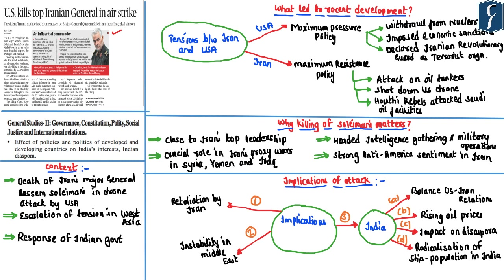In today's newspaper, we have multiple articles related to the killing of Iran's top security and intelligence commander, Major General Qasim Soleimani, by USA. The recent developments in West Asia shall be important mainly from the perspective of GS Paper 2, International Relations, under the subsection 'Effect of policies and politics of developed countries on India's interests.' USA carried out a drone attack in Baghdad which led to the death of Major General Qasim Soleimani. Soleimani was considered to be the architect of Iran's growing influence in West Asia, and hence his killing is set to escalate tensions in the West Asian region. Iran's Supreme Leader has vowed to take harsh revenge against USA, and the Indian government has issued an official statement expressing grave concerns over the prevailing security situation in West Asia, calling for both countries to exercise restraint.